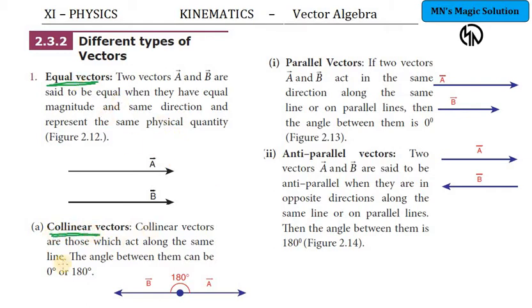Next heading: collinear vectors. Collinear means in the same straight line. So one vector and the other vector, both are in the same straight line. Direction can be the same or different, but it should be in the same straight line. They are called collinear vectors. The angle between them can be 0 or 180 degrees. If both are in the same direction, the angle becomes 0 degrees. If they are in opposite directions - A vector in one direction, B vector in the other - the angle is 180 degrees.